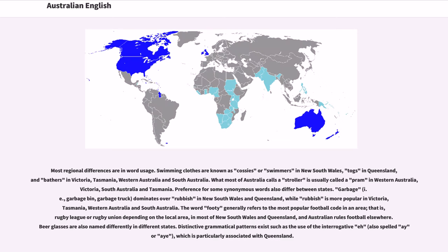Most regional differences are in word usage. Swimming clothes are known as cossies or swimmers in New South Wales, togs in Queensland, and bathers in Victoria, Tasmania, Western Australia, and South Australia.